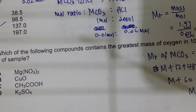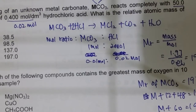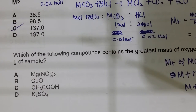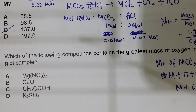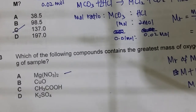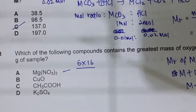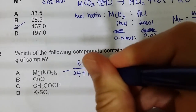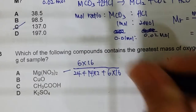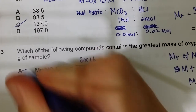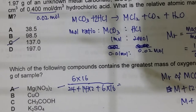Question three asks which compound contains the greatest mass of oxygen in 10 g of sample. You need to find the percentage composition of oxygen in each compound. For magnesium nitrate, there are 6 oxygen atoms: 6 × 16 divided by the Mr of Mg(NO₃)₂. Magnesium nitrate has the greatest percentage composition of oxygen, so the answer is A.